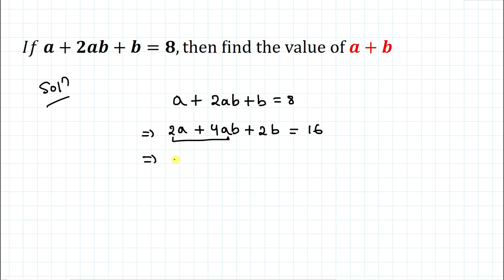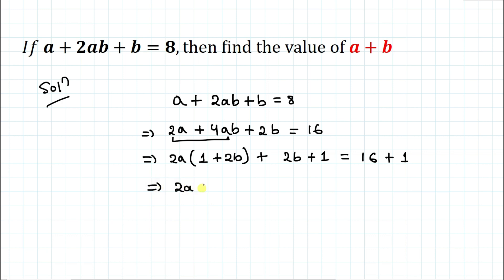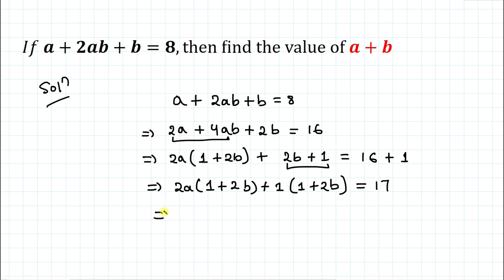I will take 2a common from the first two terms, so we have 2a multiplied with 1 plus 2b. Then in order to factor the remaining 2b term, let's add plus 1 on both sides. This gives us 2a multiplied with 1 plus 2b, plus 1 multiplied with 1 plus 2b equals to 17, which implies 1 plus 2a multiplied with 1 plus 2b equals to 17.